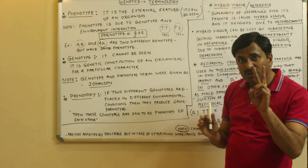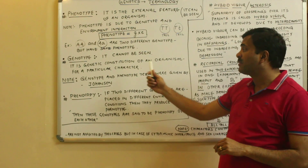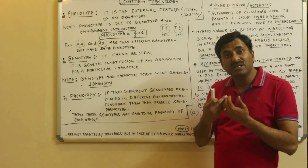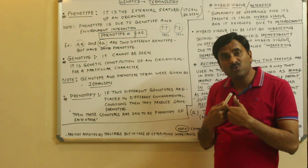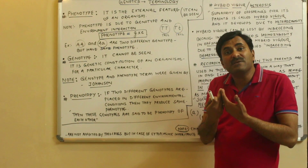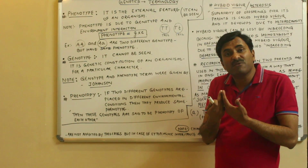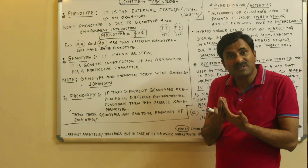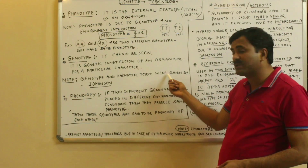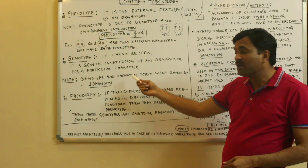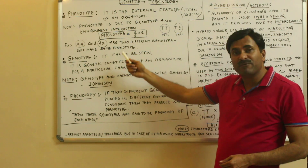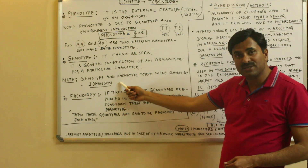These are two important terms used in genetics. If I am tall and it is visible from outside, that is the phenotype, but I am tall because of the genes for tallness found in me — that is the genotype. Both the terms genotype and phenotype were given by Johansson.